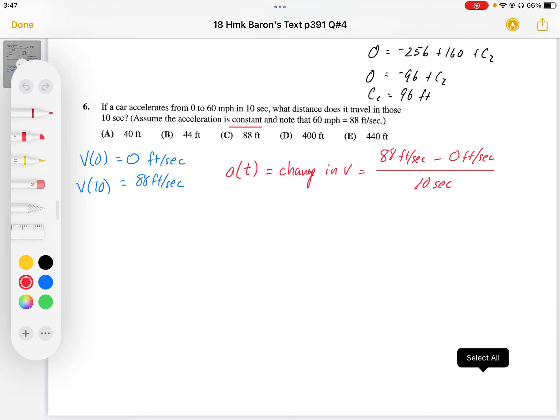So we go from zero to 88 feet per second in 10 seconds and their acceleration works out. So I'm just going to write it over here. A of t equals 8.8 feet per second per second, or second squared.